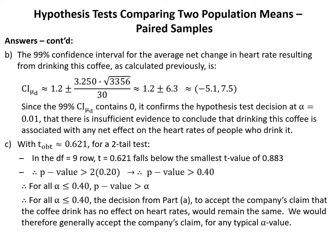For all alpha values less than or equal to 0.40, the p-value will be greater than alpha. Therefore, the decision from Part A to accept the company's claim that the coffee drink has no effect on heart rates would remain the same. We would generally accept the company's claim at any typical or common alpha value — in other words, at all common levels of confidence.